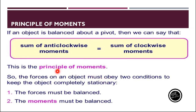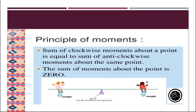For the principle of moments, we must obey two conditions: firstly, the forces must be balanced, and secondly, the torques must be balanced. If the torques are balanced it means they will cancel the effect of each other and the body will be balanced. We conclude that the principle of moments states that the sum of clockwise moments about a point equals the sum of anticlockwise moments, which means the sum of moments about a point is equal to zero.